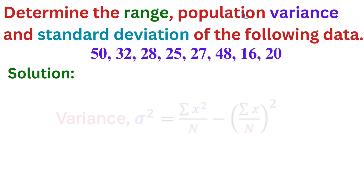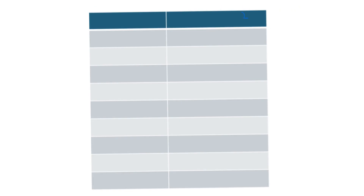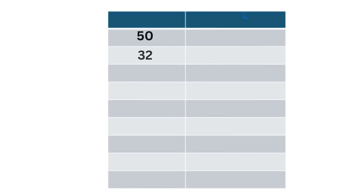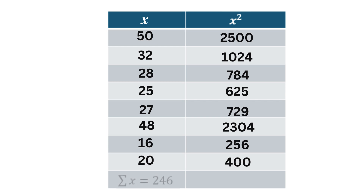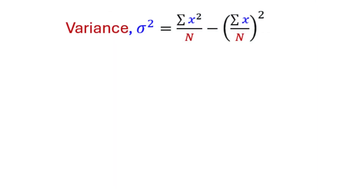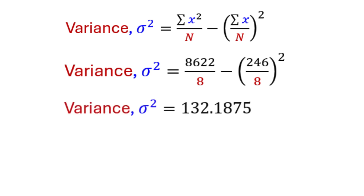To find variance, we will use the population variance formula. We need the summation of x and summation of x squared. For this, prepare a table as shown. Enter all the given data in the first column labeled x. Find the square of each number and enter it in the second column labeled x squared. Find the sum of all x and the sum of all x squared values. Substituting these summation values into the formula and simplifying, we get a variance of 132.1875.